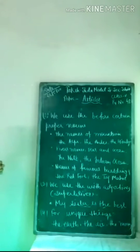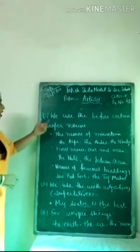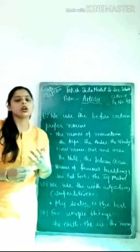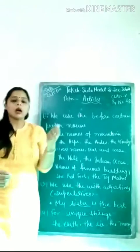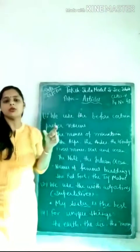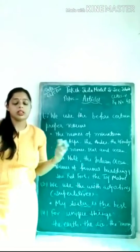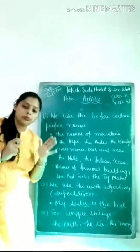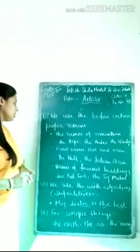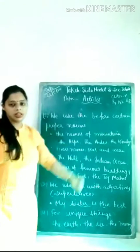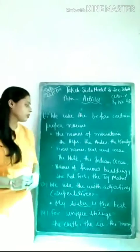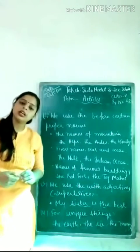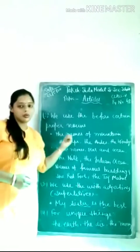We use The before certain proper nouns. Proper nouns are the names of specific persons, places, or things. For the names of mountain ranges, we use The — for example, the Alps, the Andes, the Himalayas. These are all names of mountain ranges, that is why we use The before them.